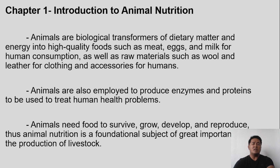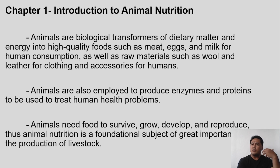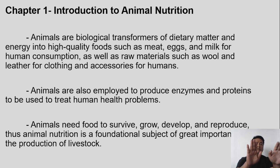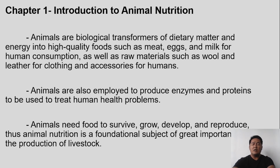Animals eat, then they use up the nutrients from the food that they are eating, and in return, the animals give out products. After eating, they will produce high quality foods like meat, eggs, and milk, as already mentioned.